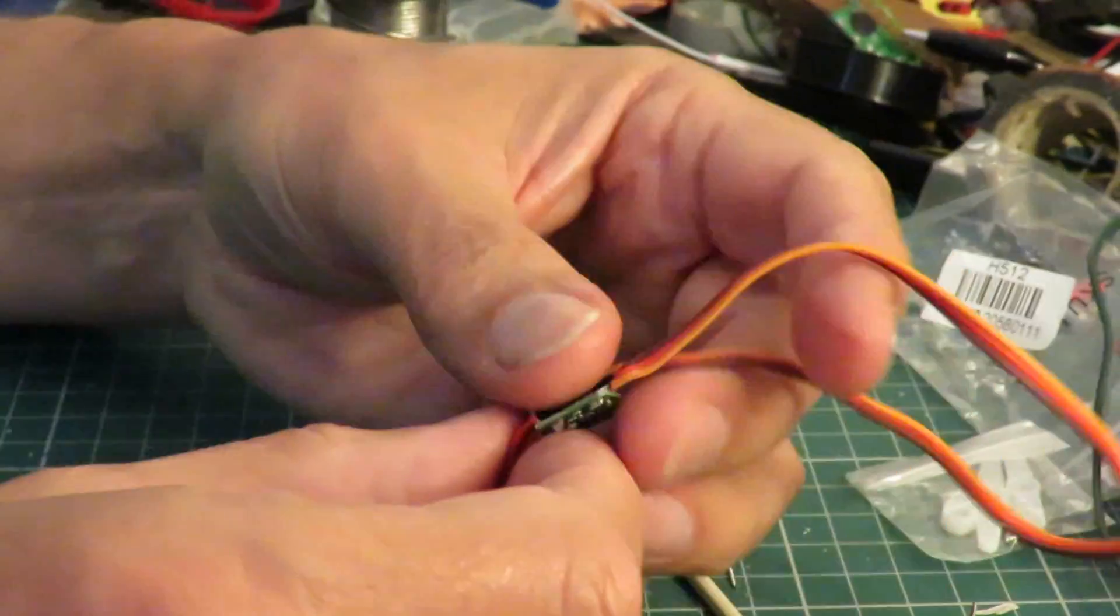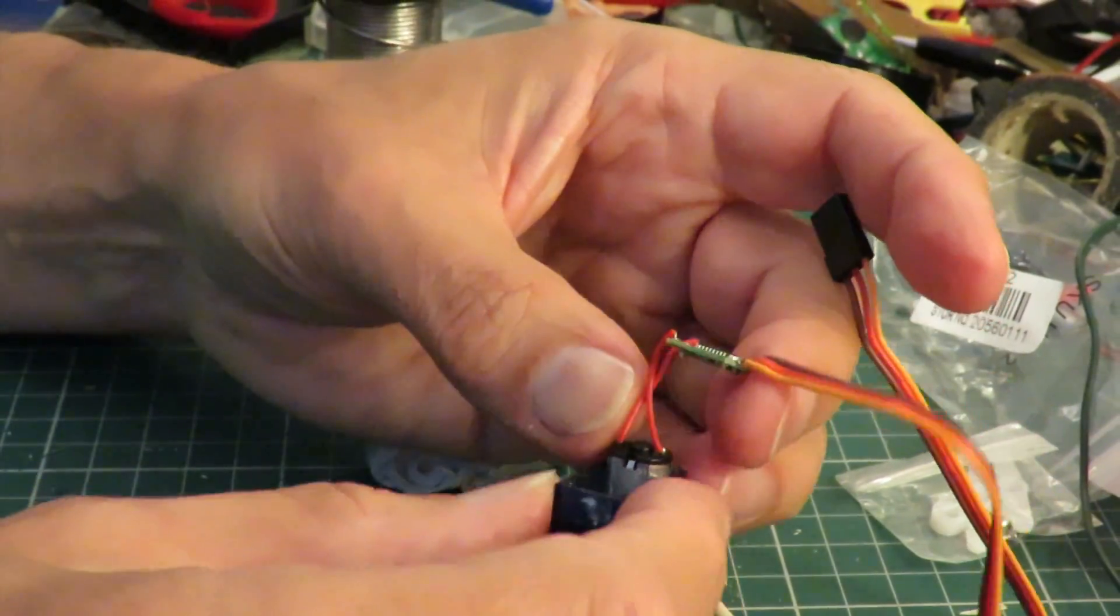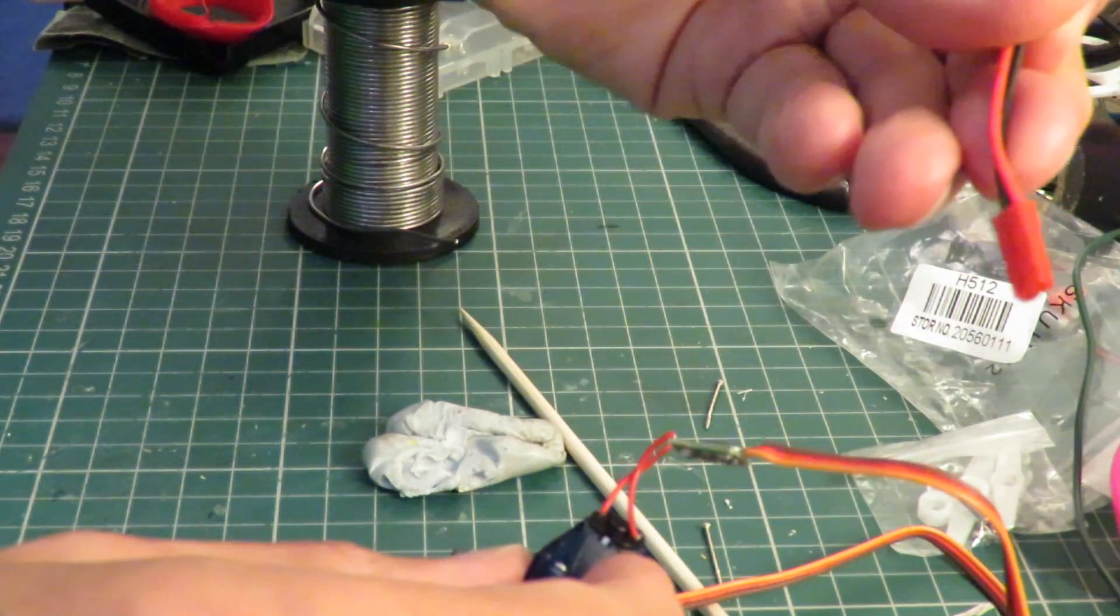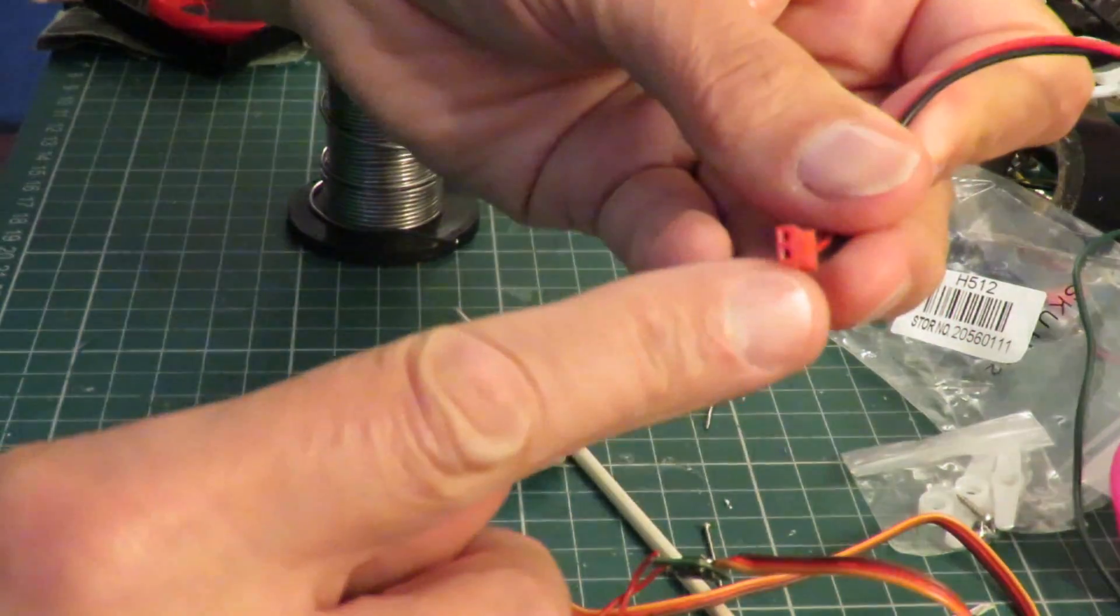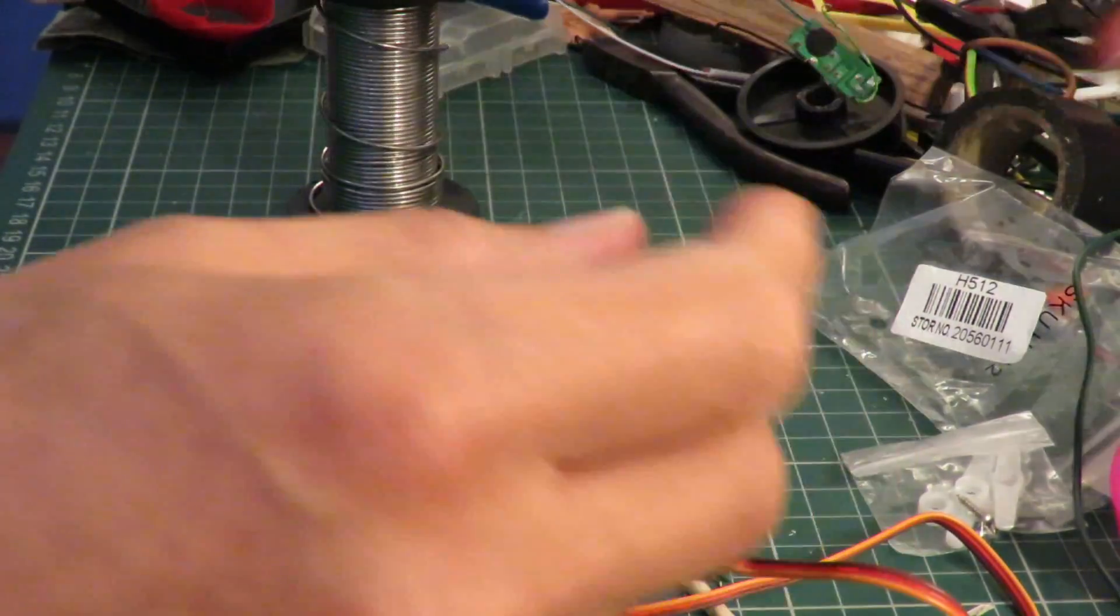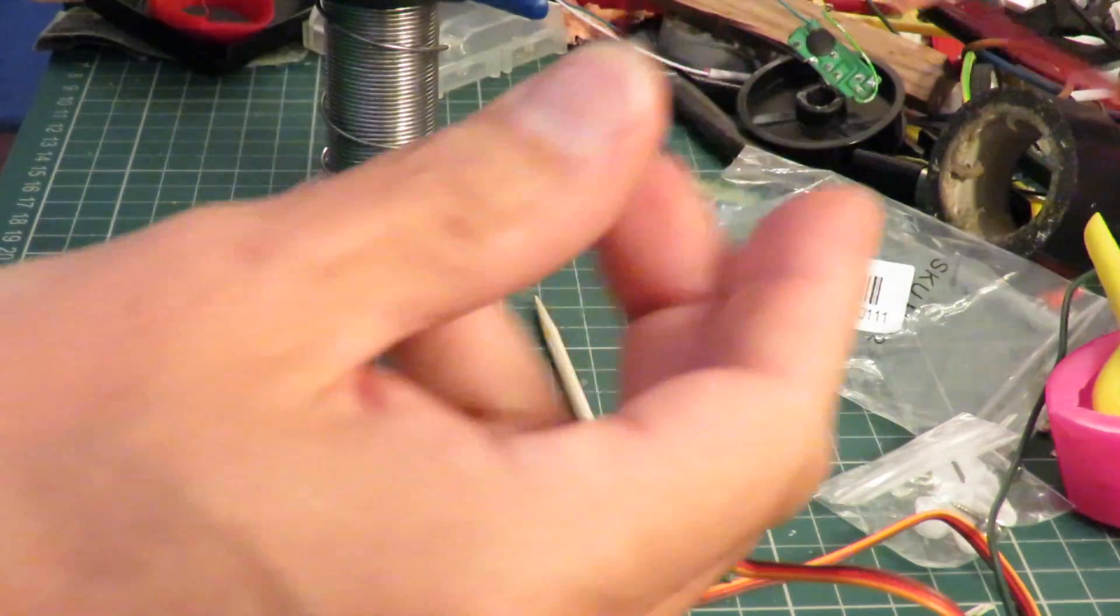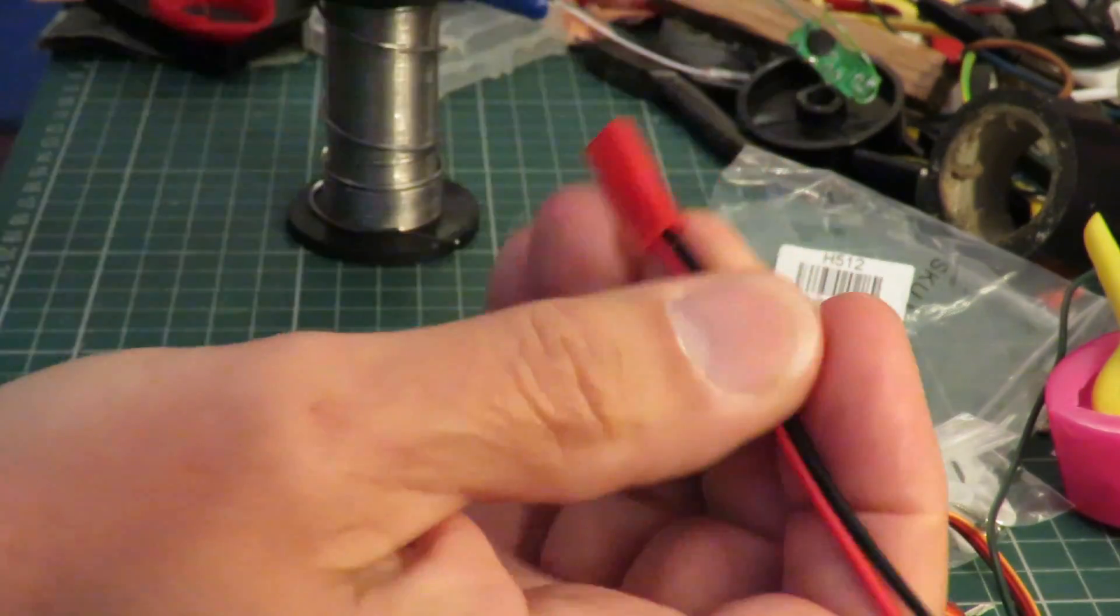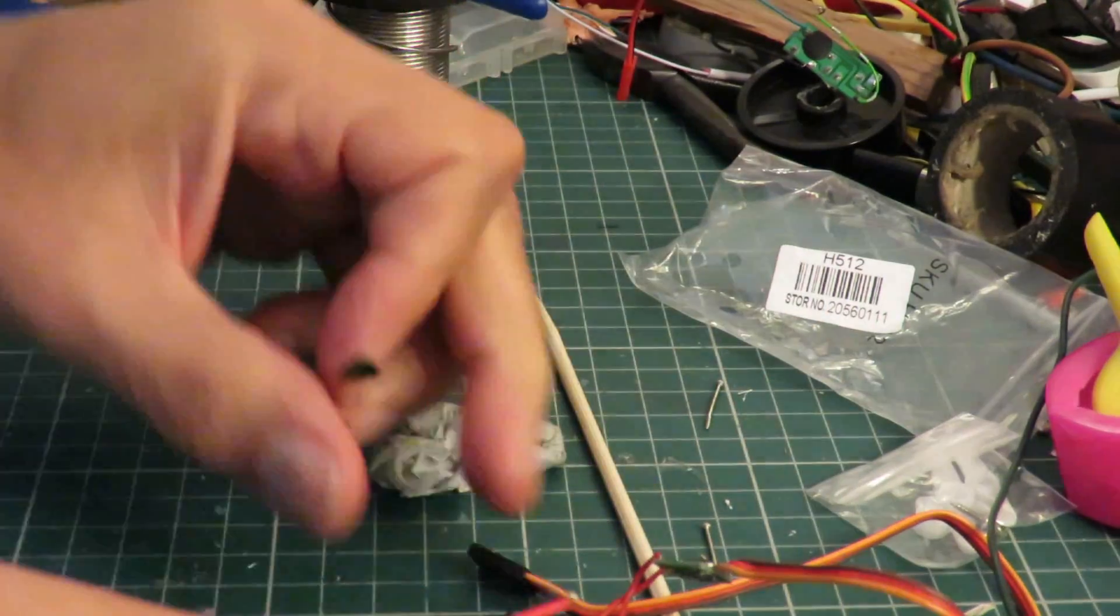So what I think I'll do is desolder these and wire on one of those sort of plugs. Well actually the opposite to that. There we are. There's one laying there. One of them. So I'll solder one of them directly on.